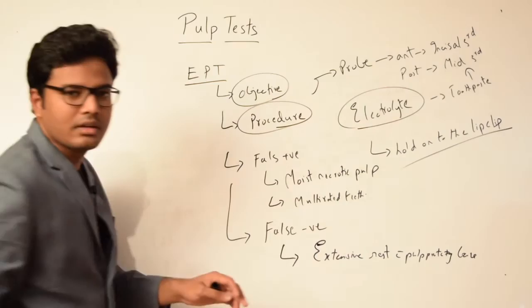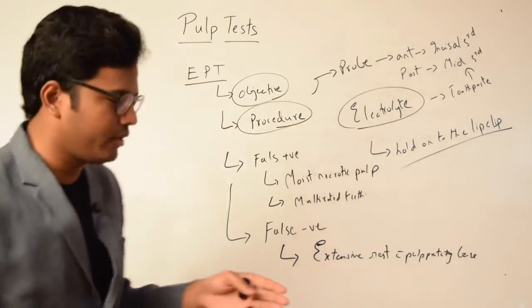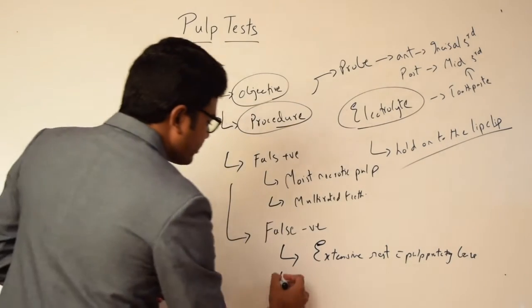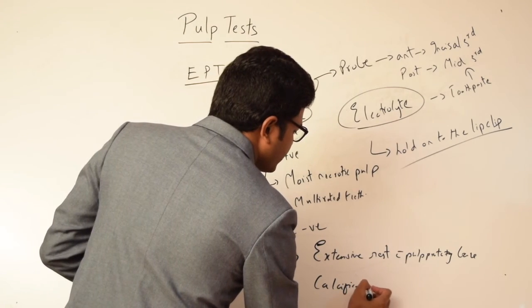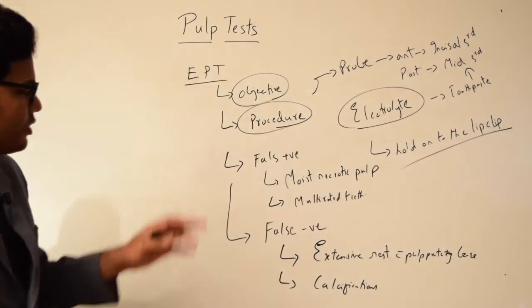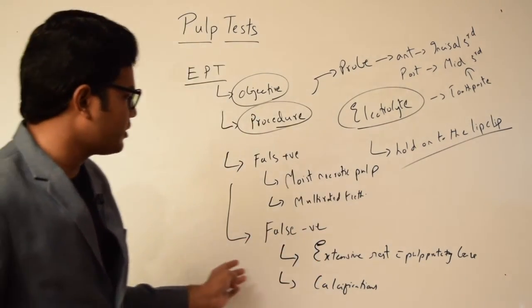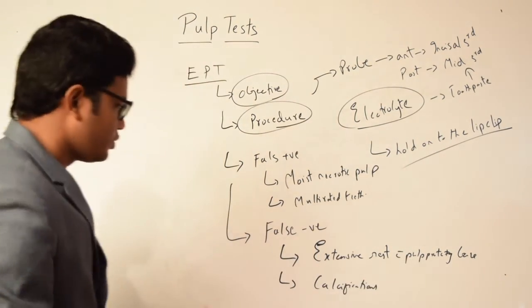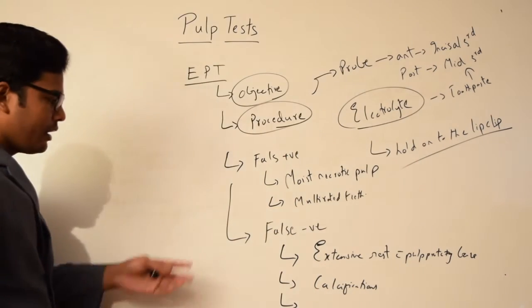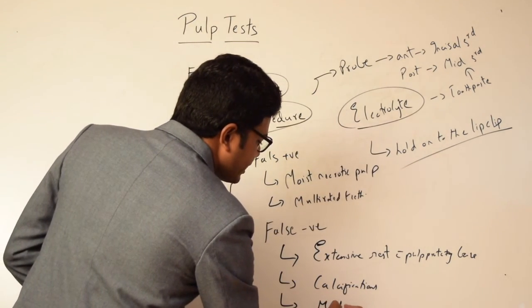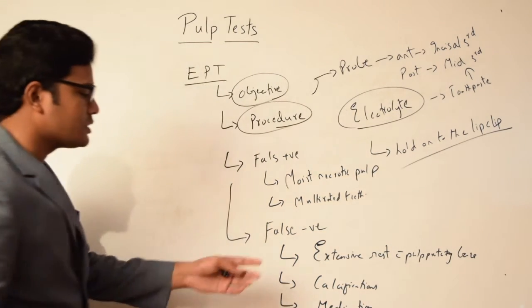In this circumstance, because of the presence of the restorative material as well as the base, there is hindrance to the flow of current. The presence of any calcifications or deposition of tertiary dentin leading to the closure of the pulp chamber thereby inhibiting the flow of current can also lead to false negative responses.